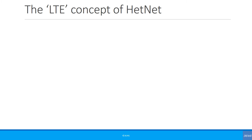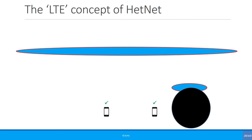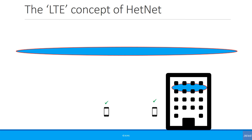Now let's look at the other definition of HetNets — the LTE concept of HetNet. Here I have my macro cell. The spectrum operators use is really expensive, so when an operator has invested in spectrum they want to make full use of it. Suppose the operator decides to deploy a small cell using the same spectrum. A UE in one area will work fine, another will work fine too, but a UE in an overlapping area won't work well — it wouldn't receive any signal — because there would be interference, preventing the UE from seeing either the macro cell or the small cell.